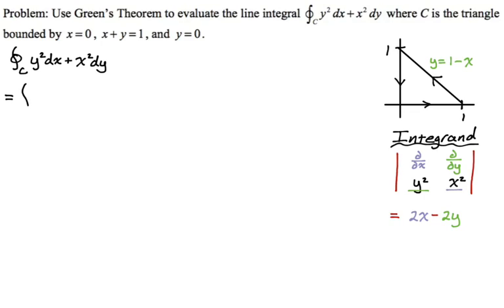Now we need the bounds. Looking at the region, we could go with respect to x then y, or y then x. Since I already wrote y equals one minus x, what makes sense is for y to start at zero and go up to the line, so y bounds are zero to one minus x. Then x bounds are zero to one. Using Green's theorem really comes down to being good at double integrals. Setting up the regions isn't bad if you just think about what y is doing and what x is doing.